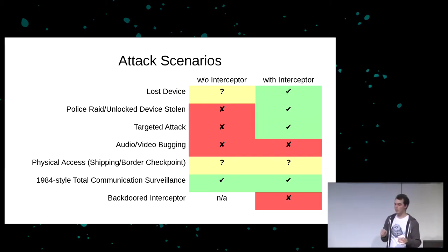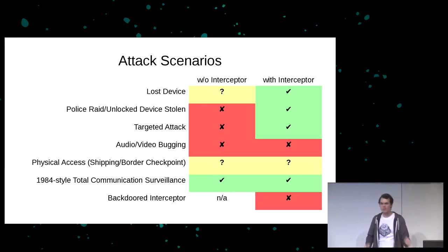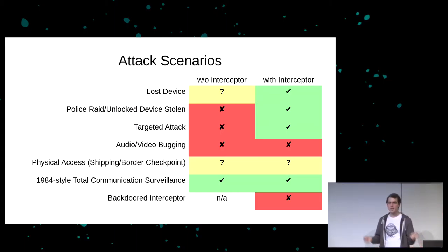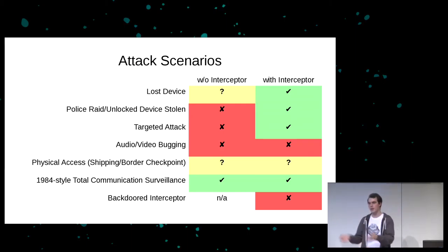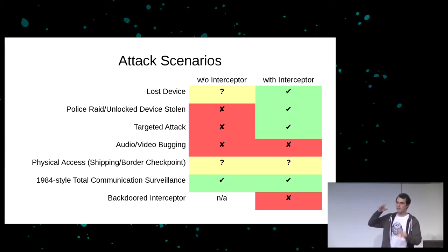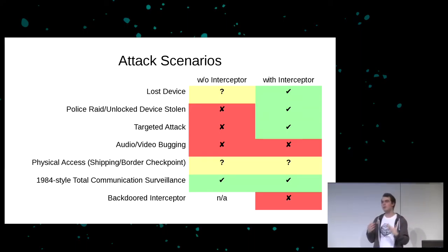In a targeted attack scenario — somebody with a lot of money who really wants your email — without an interceptor you have a real problem. Even if you're using QubesOS and encrypting everything with GPG, you have an off-the-shelf Linux OS with a Xen hypervisor running on an x86 platform with lots of proprietary firmware, and many places are handling plain text data. The entire stack is so complex that I think it's practically guaranteed for every part of it that flaws will be found. For example, Apple's iPhone has a really good security architecture, but it's still pretty complex and people are getting around it.